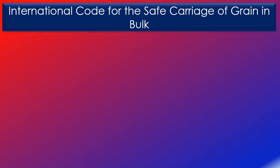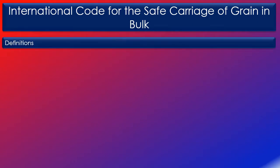Grain in the code is defined as a term that covers wheat, maize, corn, oats, rye, barley, rice, pulses, seeds and processed forms thereof whose behaviour is similar to that of grain in its natural state.